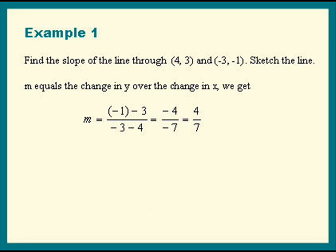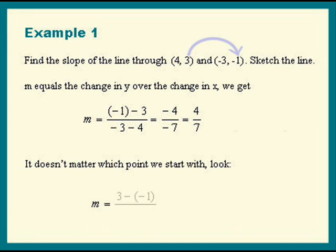It doesn't matter which point we start with. So if we start with the other point we'll have 3 minus (-1) divided by 4 minus (-3). And right away that gives us 4 over 7. Same result.